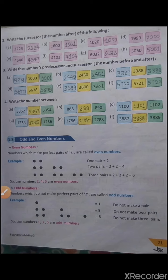Let's see question number 3. In question number 3, write the number's predecessor and successor — that means the number before and after together.